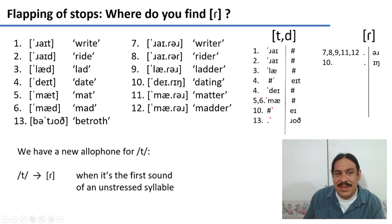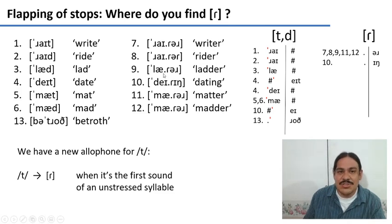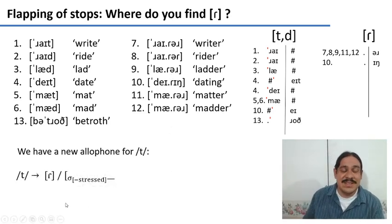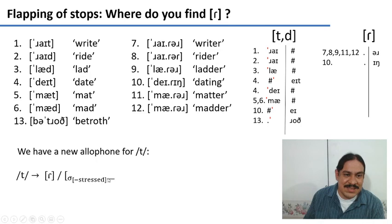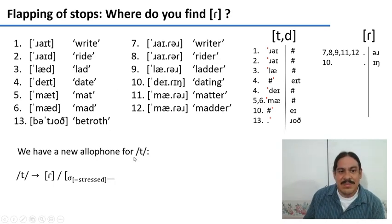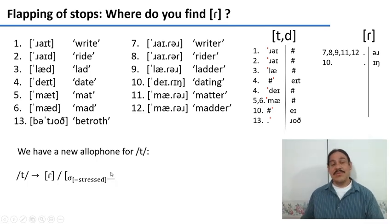So the rule is: we have a T phoneme which becomes a tap whenever it is the first sound at the syllable edge of an unstressed syllable, as in 'rider' or 'ladder.' D also has this rule — D becomes a tap in the exact same environment. As you can see, phonological rules can interact not just with segments, but with syllables.